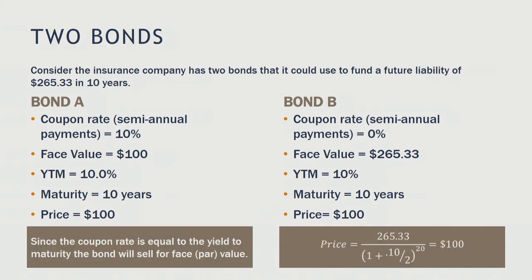Since Bond A's coupon rate equals the yield to maturity, the bond will sell for face value or par — $100. For Bond B, the zero coupon bond, discounting $265 received at the end of 10 years on a semi-annual basis of 20 periods at 10%, we also get a price of $100.